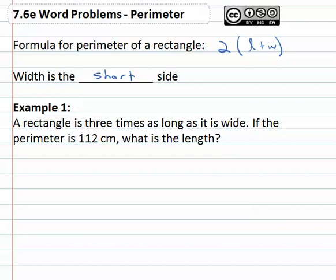So if we are told that a rectangle is three times as long as it is wide, and the perimeter is 112 cm, what is the length? Well let's see what we know. It is three times as long as it is wide. The length and the width is what we're comparing. The length is three times as long as it is wide. How wide is it? Well we don't know, so we'll make that our variable.